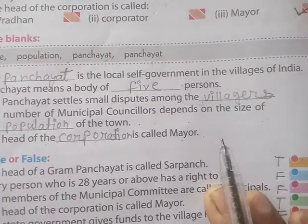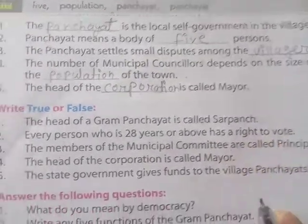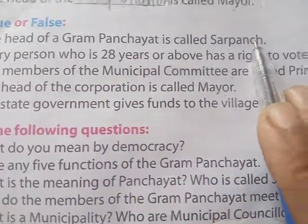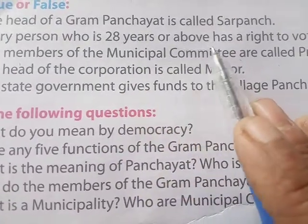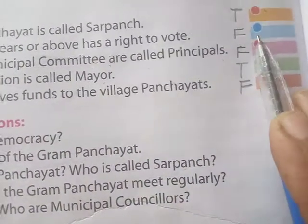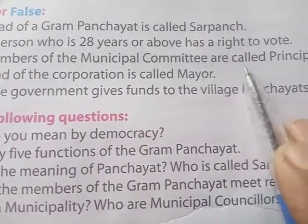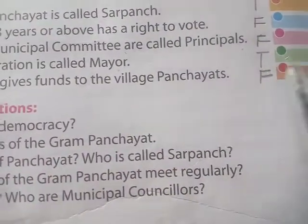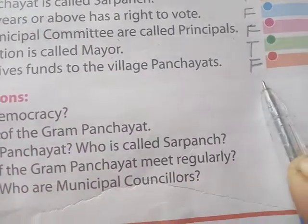True or False: The head of a gram panchayat is called sarpanch — True. Every person who is 28 years or above has a right to vote — False. The members of the municipal communities are called principals — False. The head of the corporation is called mayor — True. The state government gives funds to the village panchayat — False.